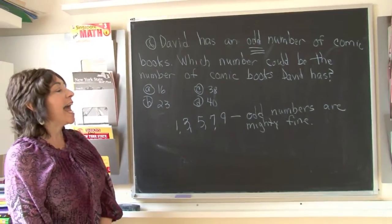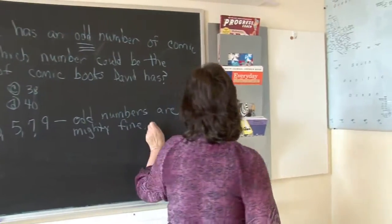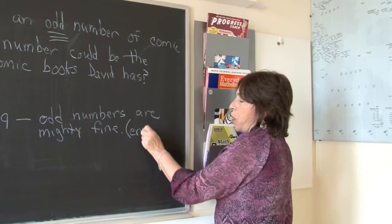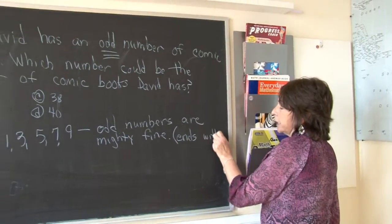It means any number that ends with one, three, five, seven, and nine. As long as it ends with a one, three, five, seven, and nine, it is an odd number.